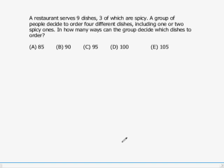A restaurant serves nine dishes, three of which are spicy. Nine dishes in total, three are spicy and six are not spicy. A group of people decide to order four different dishes, including one or two spicy ones. In how many ways can the group decide which dishes to order?